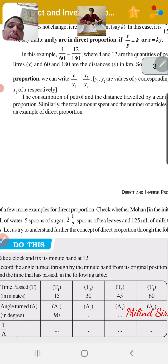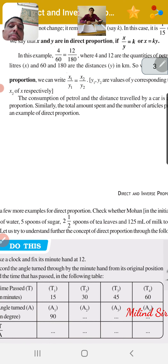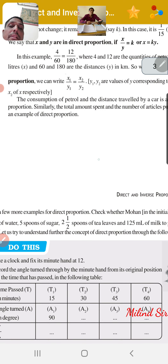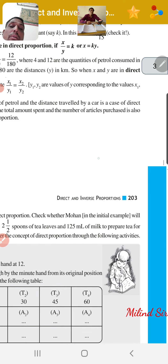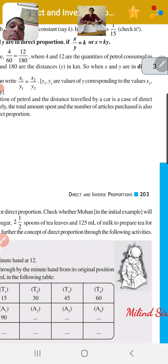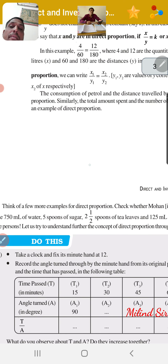Similarly, the total amount spent and the number of articles purchased is also an example of direct proportion.